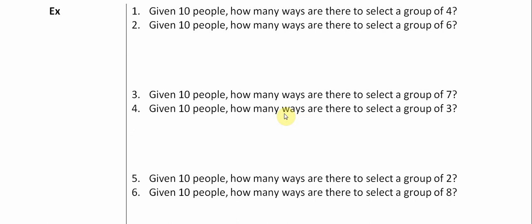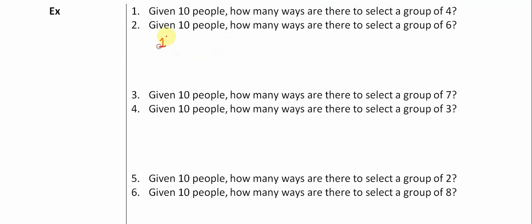Given ten people, how many ways are there to select a group of four? Well, if we just want to select a group of four, nothing special here, ordering doesn't really matter at all. So the answer to number one is 10 choose 4, which equals 210.